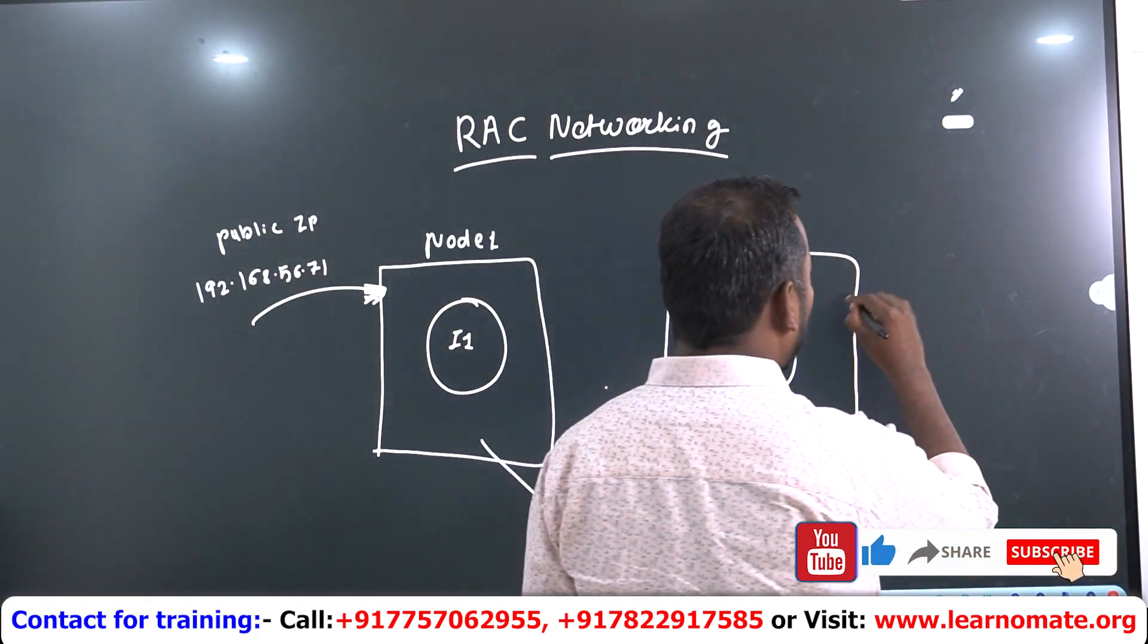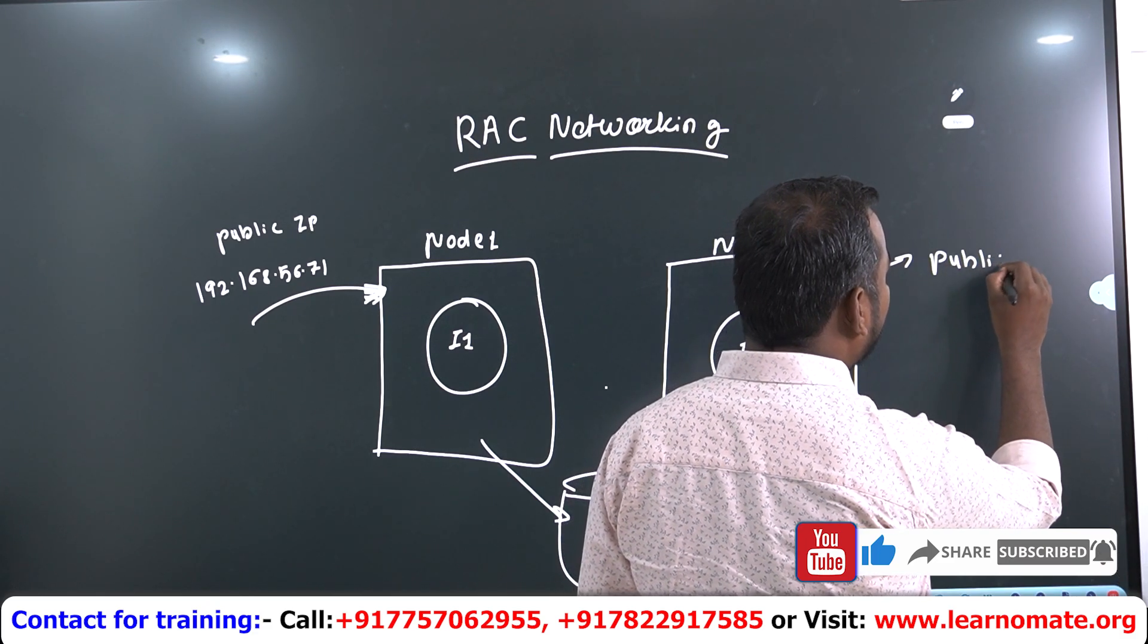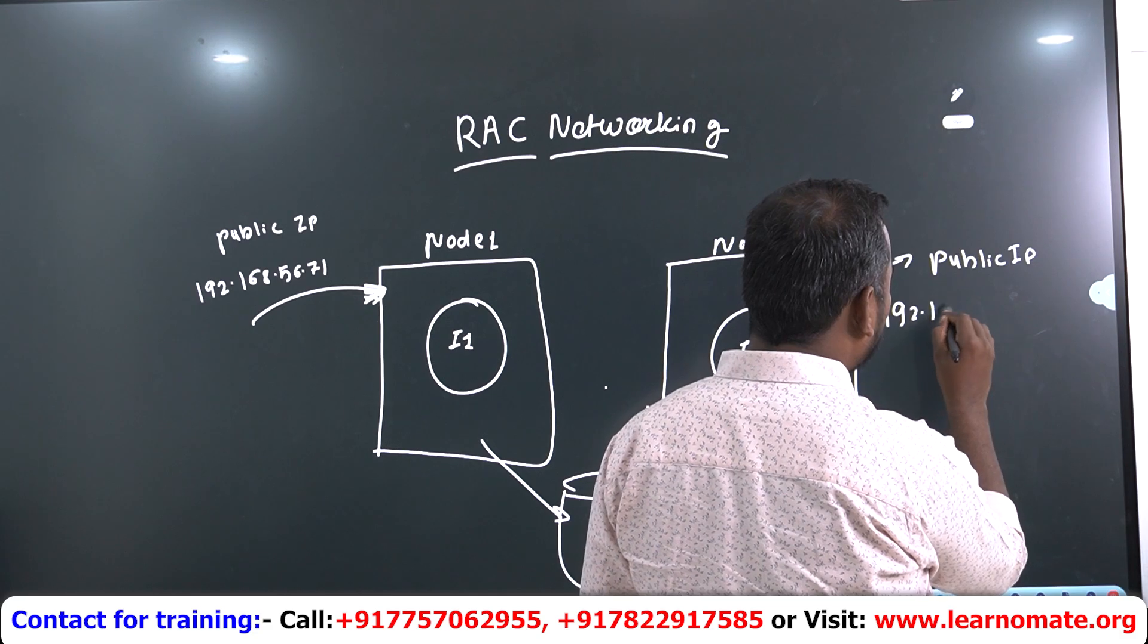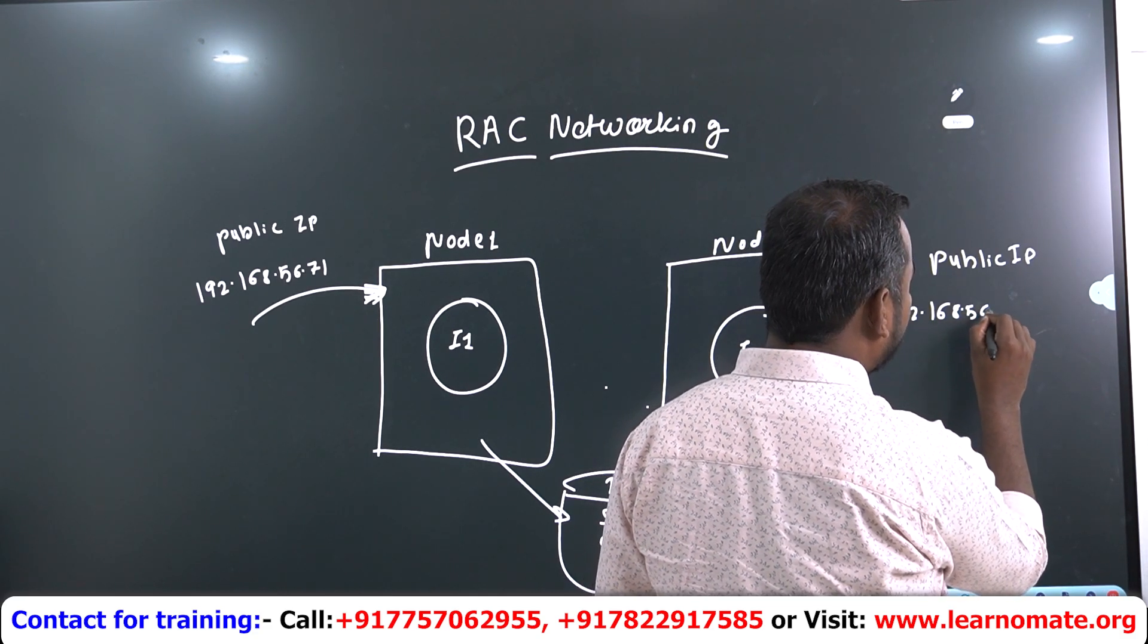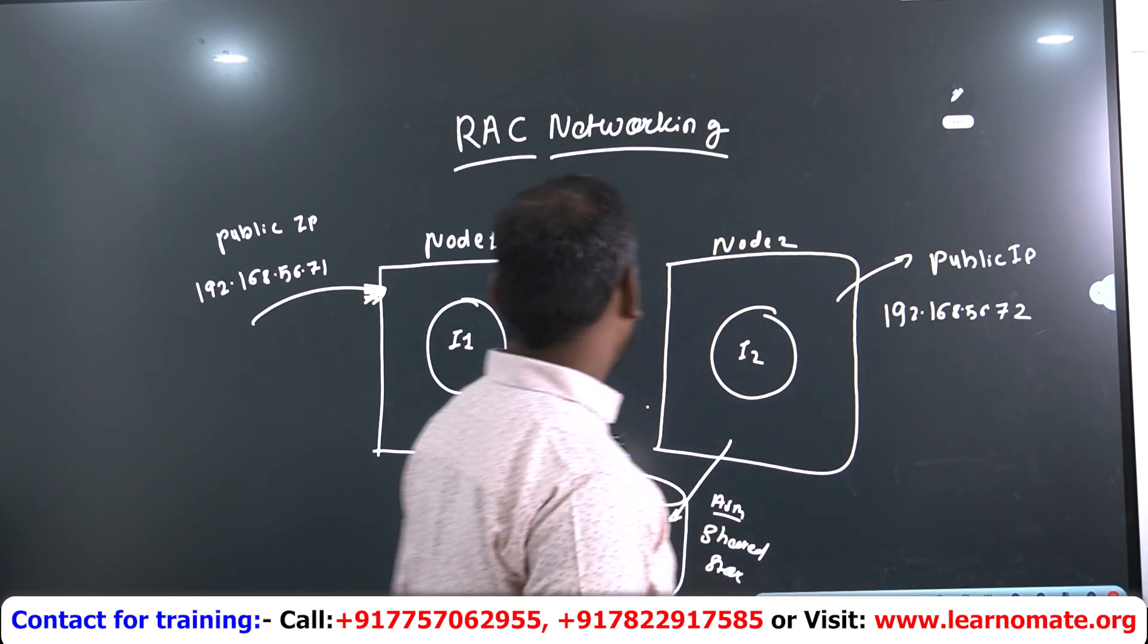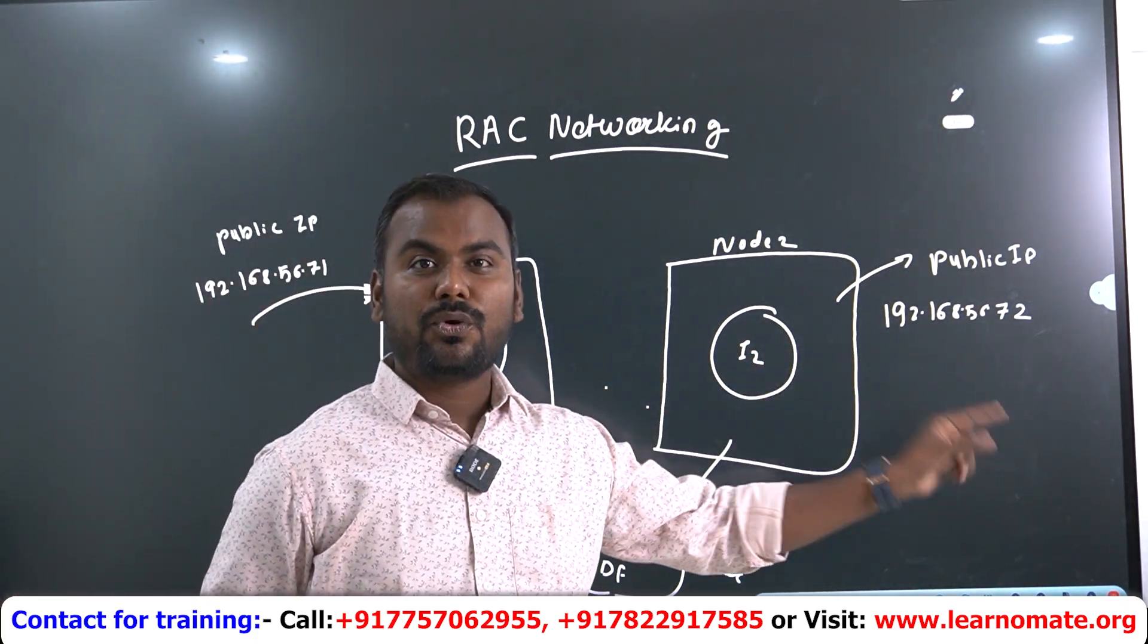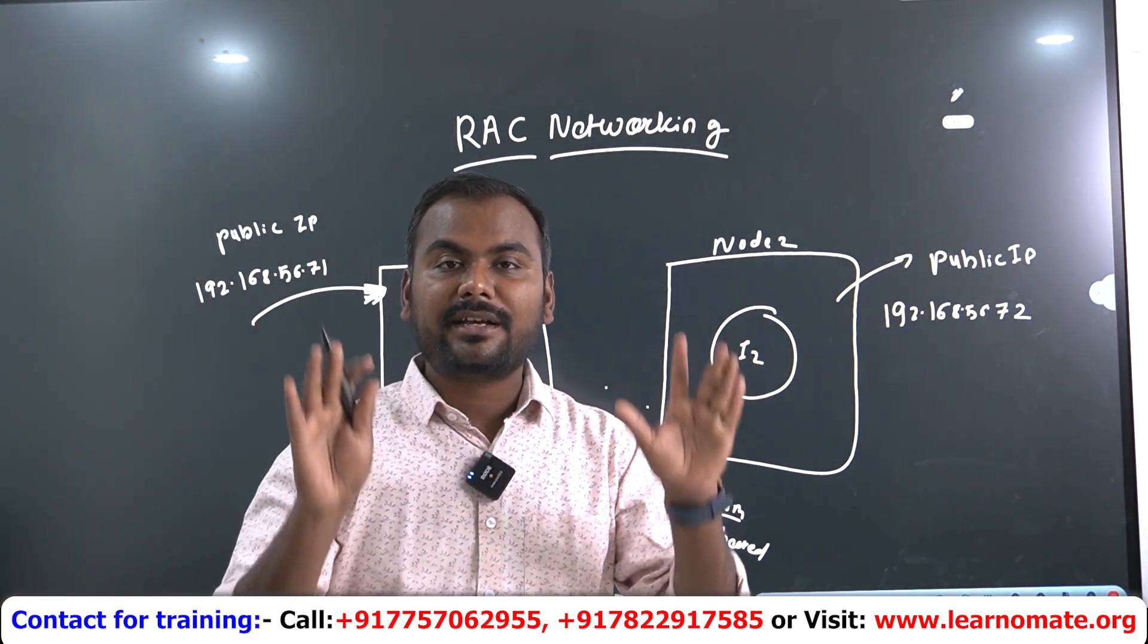Here also on node two, I'm going to assign my IP address. So there will be one more IP address 192.168.56.72. So here it is 71 and here it is 72 on node two. That is public IP address.